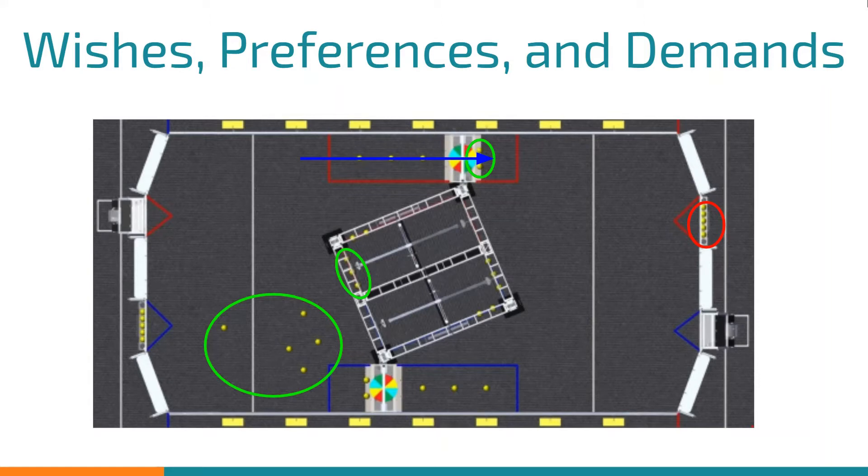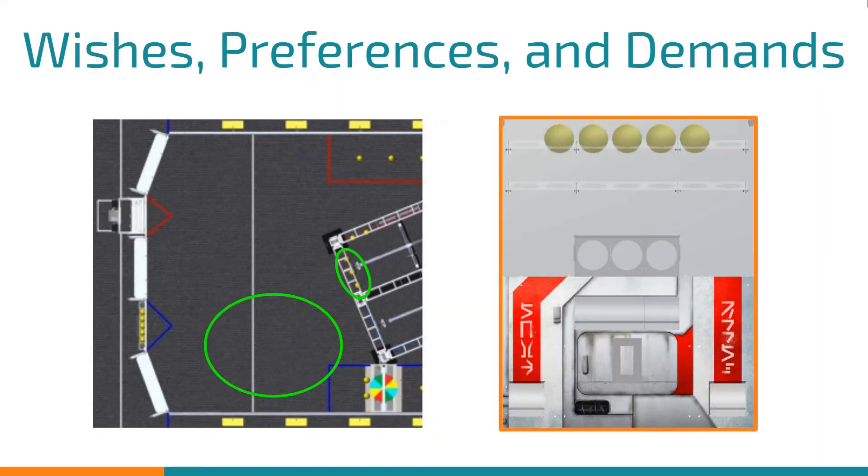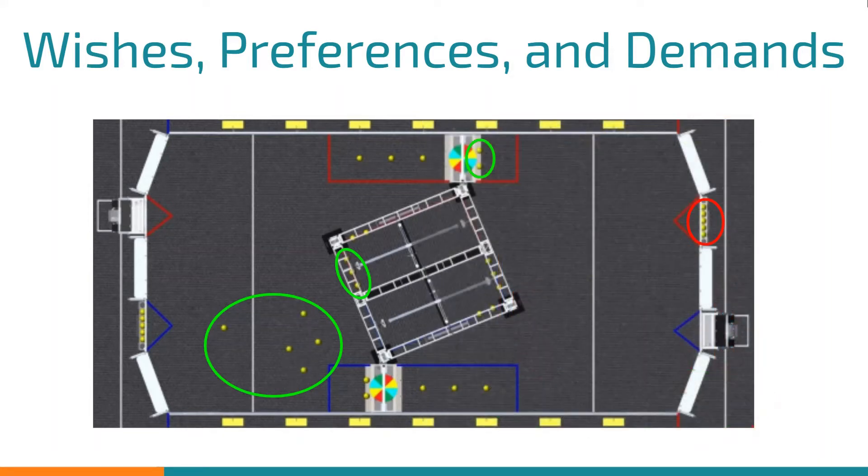The human player station was also a discussion that we had. We realized that because there were two heights to the human player station, anytime the robot came, we could simply intake from the bottom since that was already a demand. Therefore, the top was not absolutely necessary to be able to play, and we decided that the human player station, at least the top section, would be a prefer.